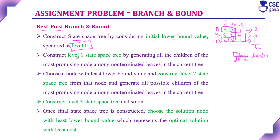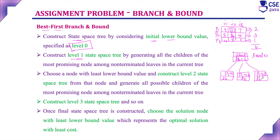Next, we construct the level 1 state space tree by generating all children of the most promising node among non-terminated leaves. For person P1, we assign job 1 and calculate the lower bound, then assign job 2 and calculate, then assign job 3 and calculate. Among these three lower bound values, whichever is least, we proceed with that node. This becomes level 1.